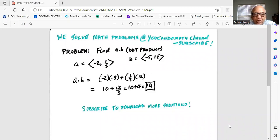The problem says find a dot b (dot product). A is given in component form as negative two and one third, and b in x and y components is negative five and twelve.